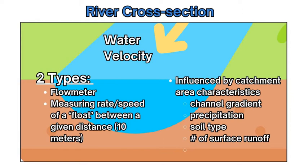The first is a flow meter, a device you can lower into the river at any point or location and it will take accurate measurements of the speed or flow of that river. The next is a more crude method where you put two markers that are 10 meters apart, use a float to traverse from one marker to the other, record the time, and from that distance and time you can calculate the speed or velocity.